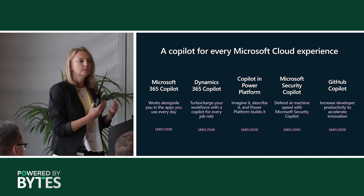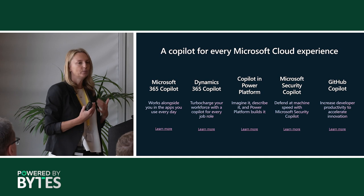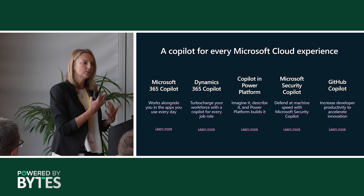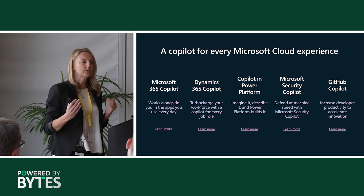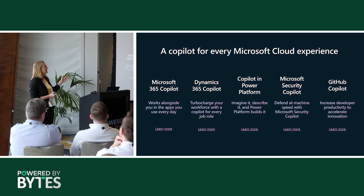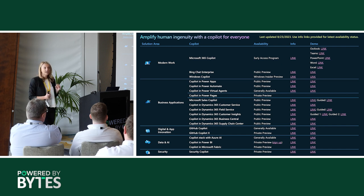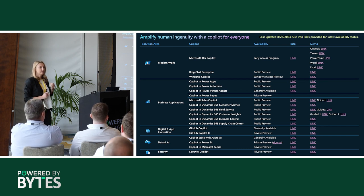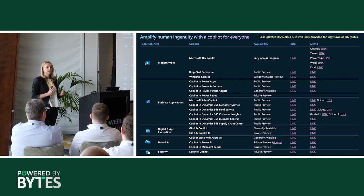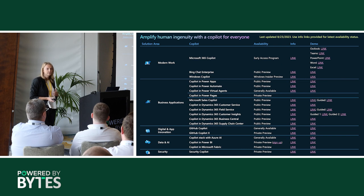Our large language model used for Copilot sits in Azure, and the data put into those models is not shared out to the public. We have a Copilot for every one of our cloud experiences. They're designed to help you do complex tasks and really get the value out of the products — because most of us are probably only using 10 to 20 percent of apps like Word, Excel, and PowerPoint. Copilot will help us unlock a lot more of those features we're paying for.